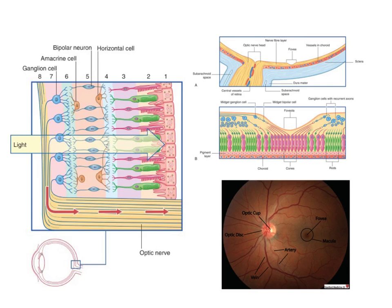Finally, a couple more clinical correlates for the retina. Most of you will have heard of a detached retina or retinal detachment. A common type is where the photoreceptors separate from the underlying pigment epithelium, and fluid can build up between those two layers. Effectively, retinal detachment is separation of the neural retina from the pigment layers. This can present with sudden blurring or loss of vision, or seeing stars or other visual artefacts.